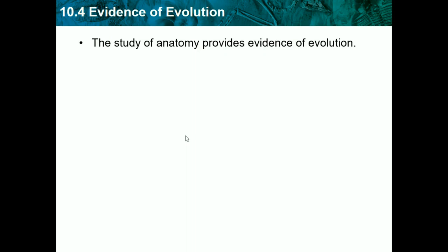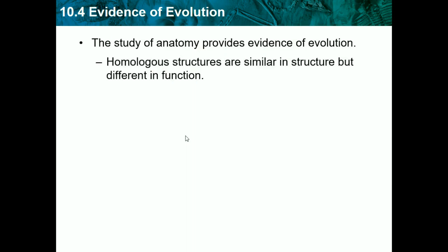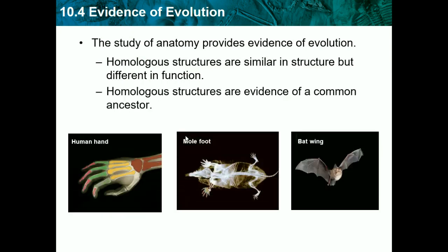The study of anatomy provides evidence of evolution. Homologous structures are similar in structure but different in function. For example, the human hand is similar in structure to the mole's foot, which is also similar to a bat wing — if you look at an x-ray of a bat wing you can see little fingers at the end. They're all the same structure but have different functions: bats use their wing to fly, we use our hands to grab things, and moles use theirs to walk. Homologous structures are evidence of common ancestry, since one animal must have had this structure and passed it down as they evolved into different species.